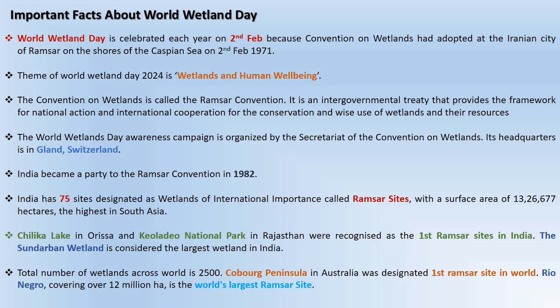World Wetland Day is celebrated on 2nd February each year because the Convention on Wetlands was adopted on 2nd February 1971. This convention is also known as the Ramsar Convention because it was adopted at Ramsar in Iran. The theme of World Wetland Day 2024 is 'Wetlands and Human Wellbeing.' The World Wetland Day campaign is organized by the Secretariat of the Convention on Wetlands, whose headquarters is situated in Gland, Switzerland.